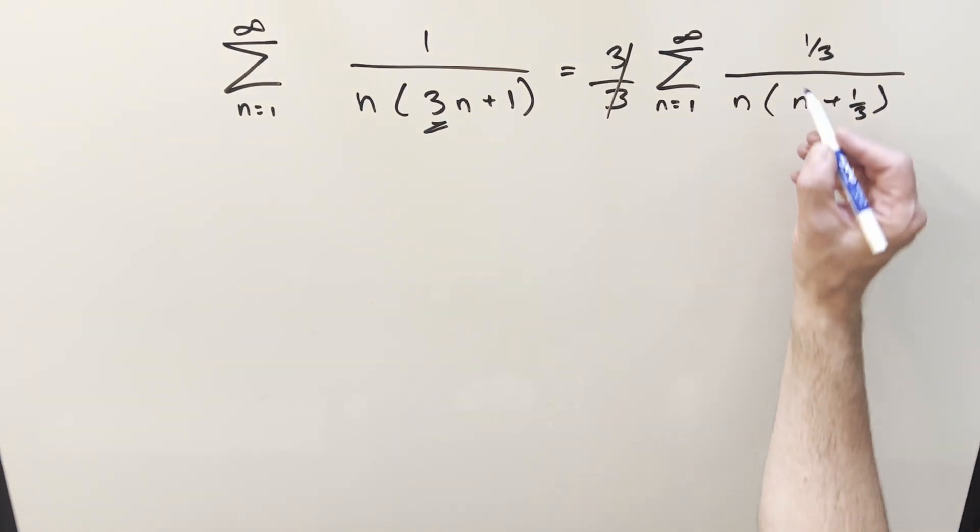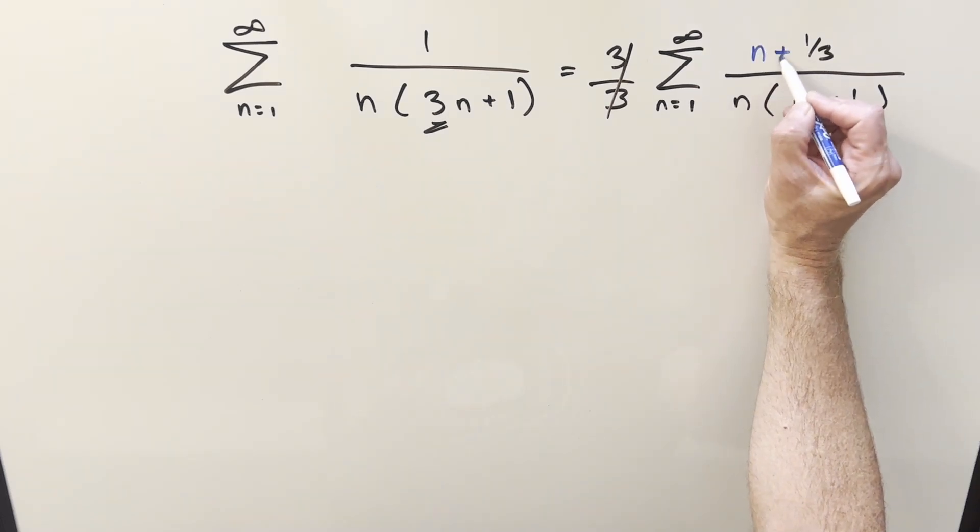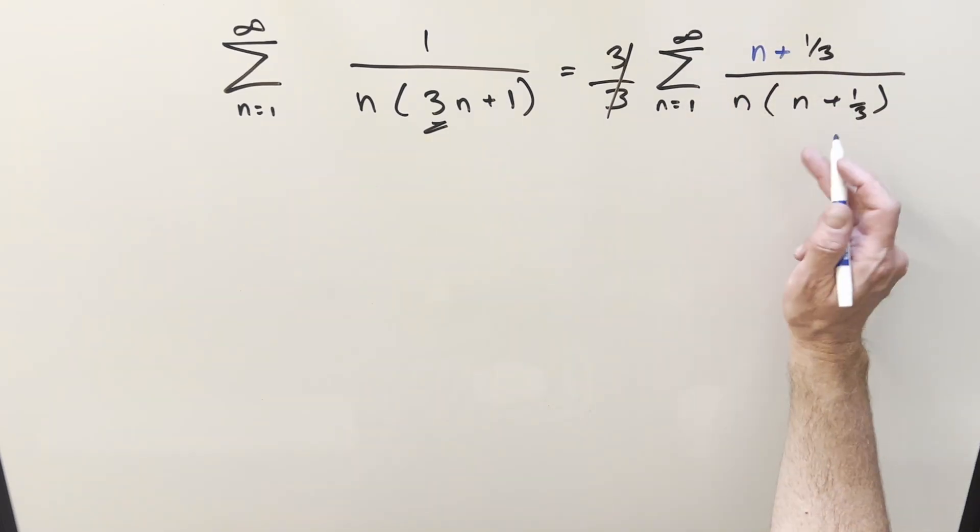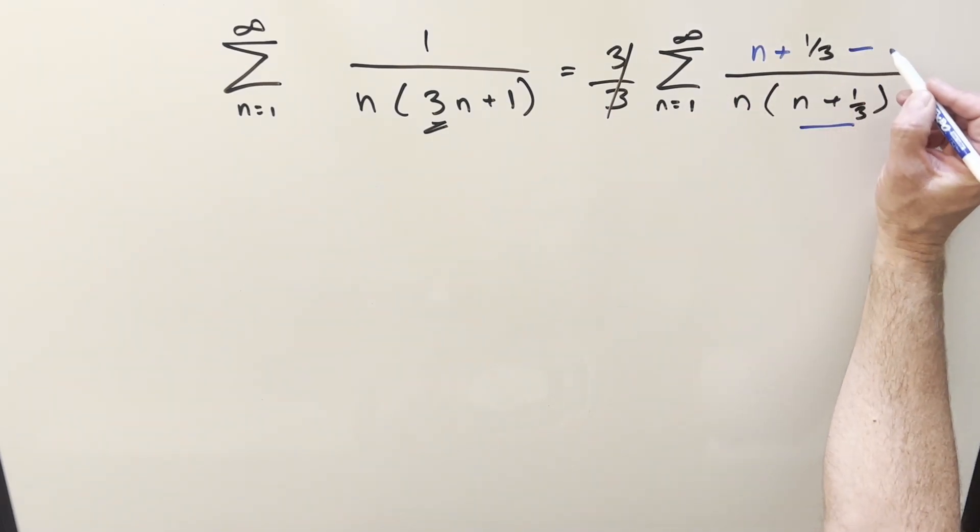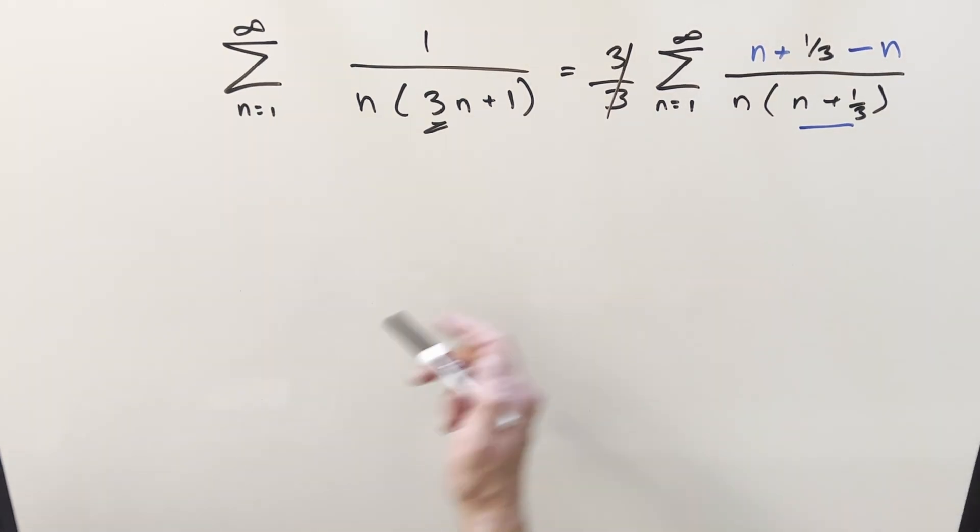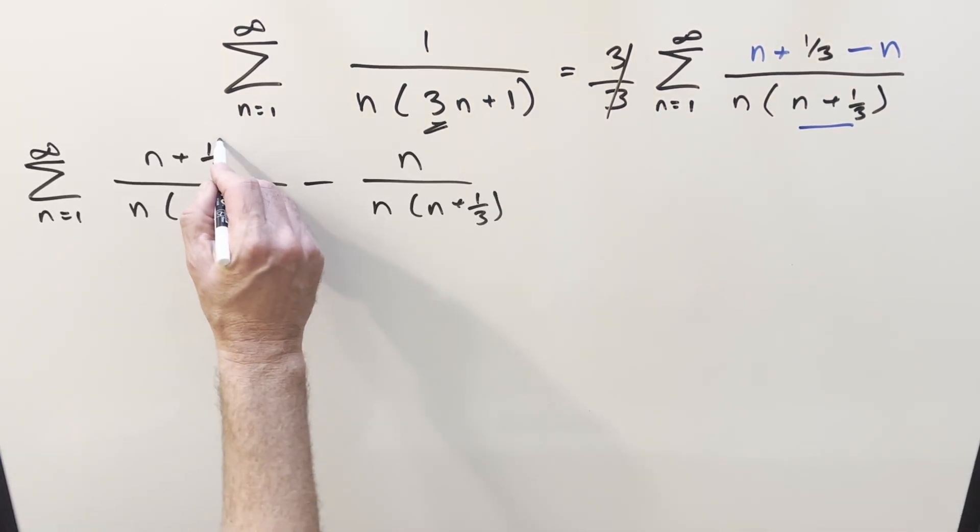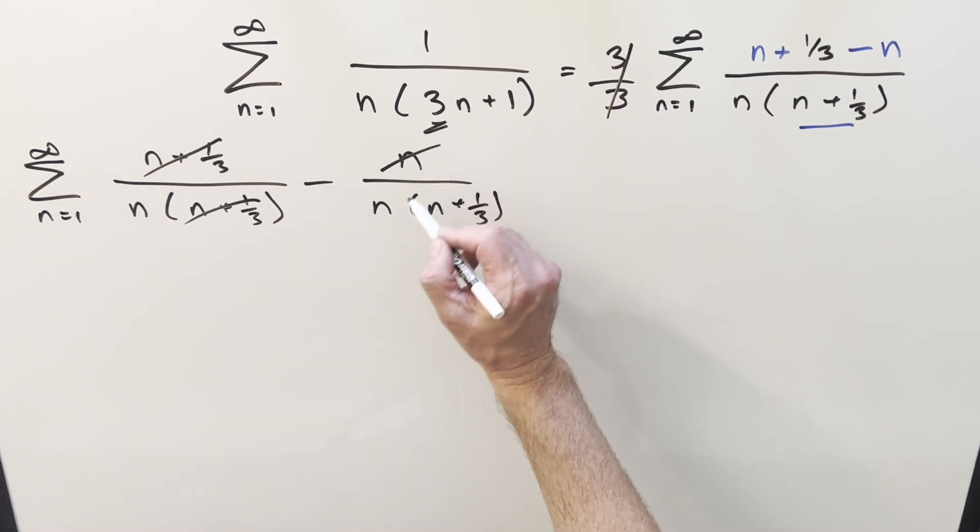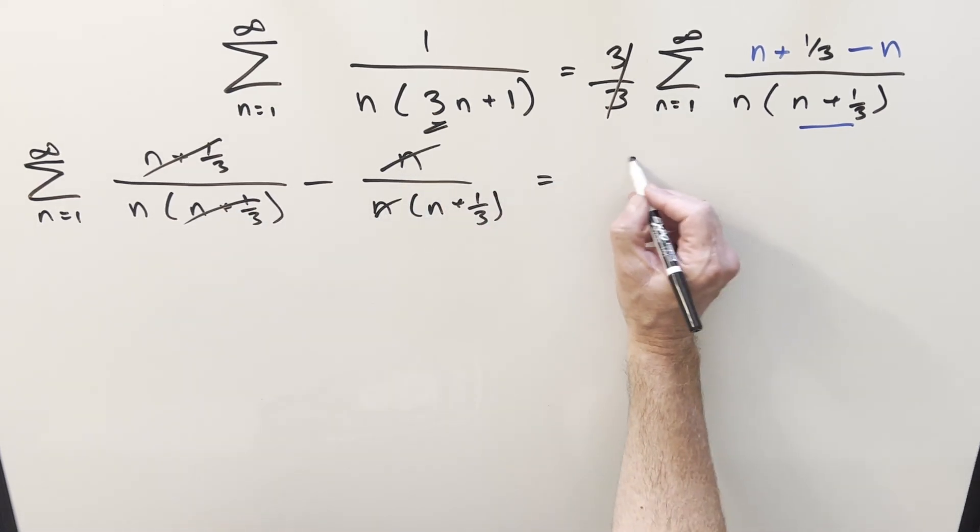And then what I want to do here instead of partial fractions is let's try to create some cancellation. I'm going to add an n on there to cancel with this part, but I don't want to change it, so let's subtract n. And then let's take this and break it up into two terms, and then we can cancel this with this, cancel n with n.